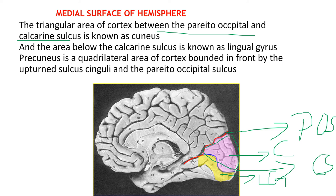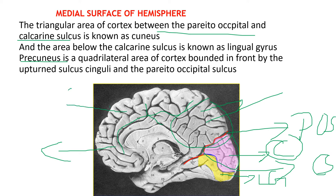The precuneus is the quadrilateral area behind the cingulate sulcus — this is the cingulate sulcus, and behind it is the precuneus. So outside the cingulate gyrus, we have five gyri from front to back: the medial frontal gyrus, the paracentral lobule, the precuneus, the cuneus, and the lingual gyrus.